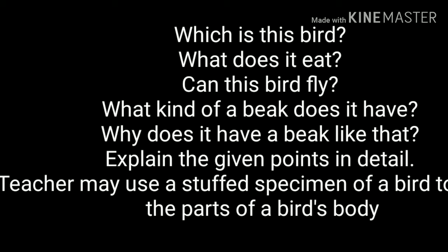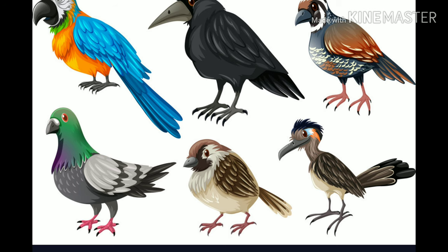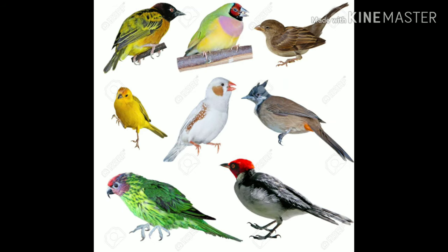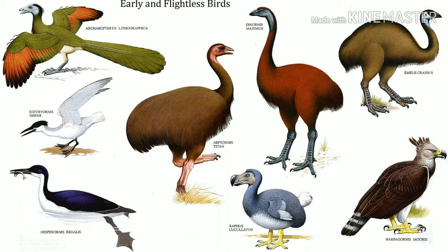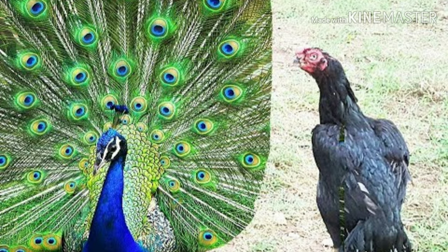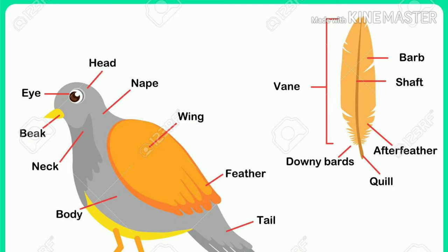The teacher should elicit answers from the students by giving relevant hints. The teacher may use a stuffed specimen of a bird to explain the parts of a bird's body. The teacher should explain that there are many different kinds of birds in this world — birds are also animals. Some well-known birds are pigeons, sparrow, owl, eagle, parrot, crow, woodpecker, ostrich, penguin, duck, hen, and peacock. Unlike other animals, birds can fly. However, some birds like the ostrich, emu, and kiwi have wings but cannot fly, and birds like hen and peacock can only cover short distances during flight.